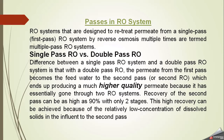The difference between a single pass and a double pass RO system is that the permeate from the first pass becomes the feed of the second pass. Due to feeding this higher-quality permeate into the second pass, we get much higher quality water at the final output. Recovery of the second pass can be as high as 90% with only two stages. This high recovery is achievable because of the relatively low concentration of dissolved solids in the influent to the second pass.